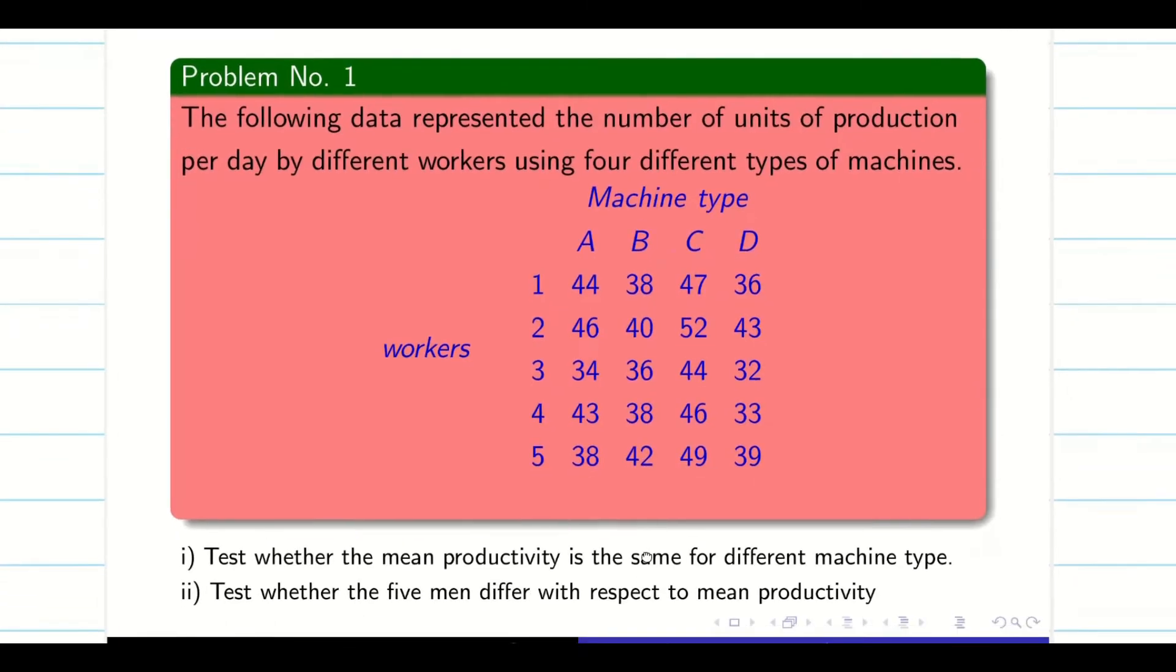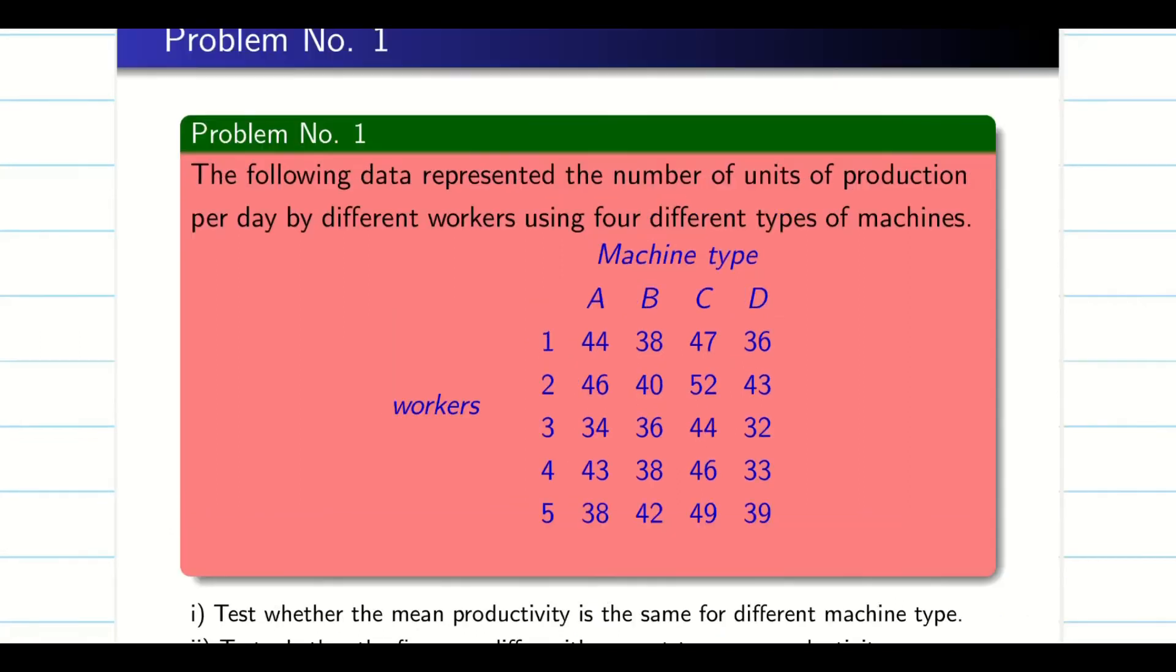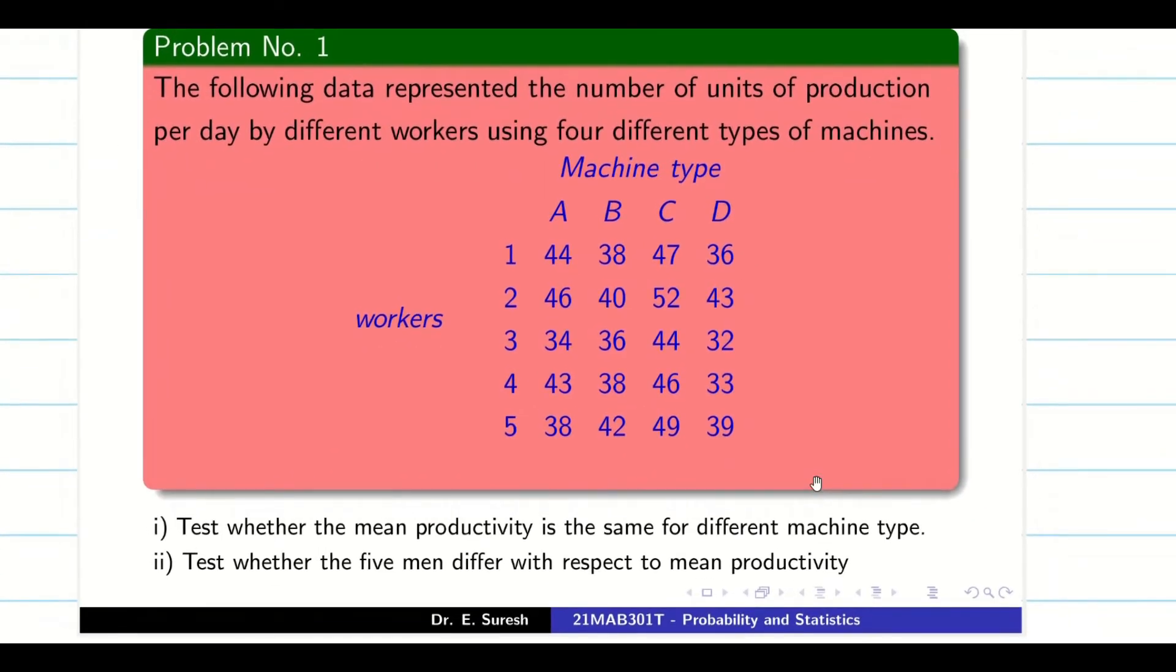See this problem. Workers are given, machines are given. We should be very careful with workers and machines. Let us see what they are asking. Test whether the mean productivity is the same for different machine types. So I have four machines here. I want to check the productivity of the four machines, whether they are same or not.